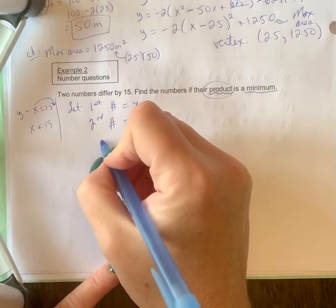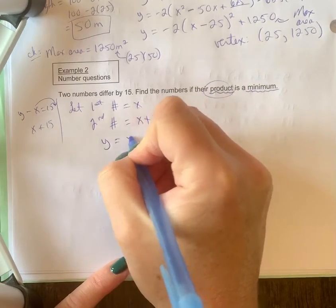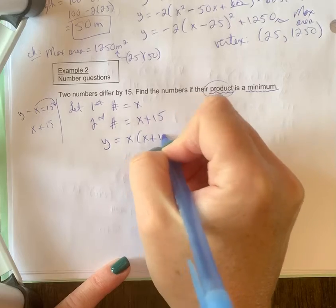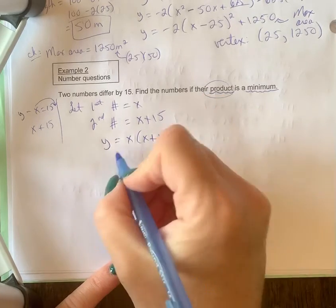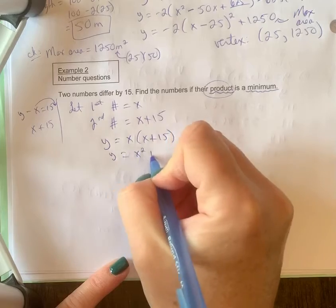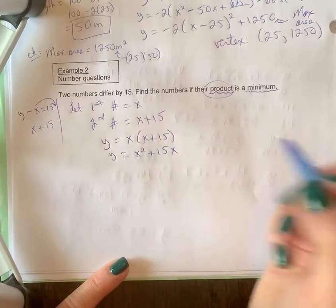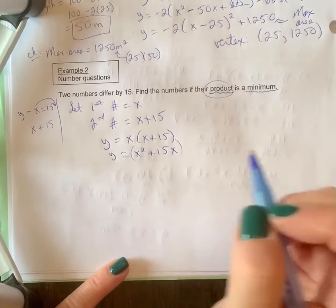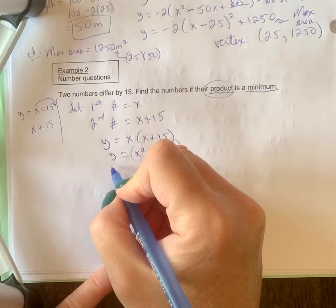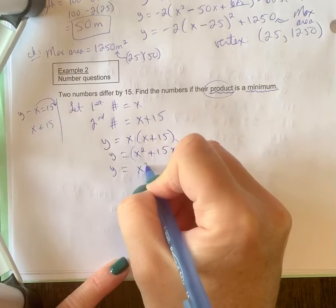Because it's a product we're going to multiply, so my equation is y equals x times x plus 15, where y will represent the minimum product. Let's multiply this through so we can complete the square.